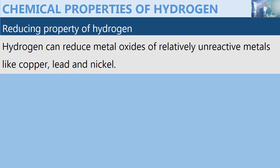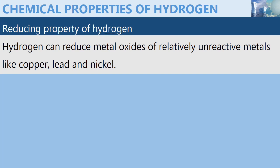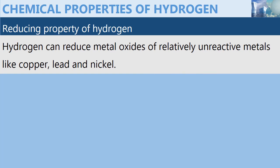Generally, hydrogen in the previous experiment has shown what we call a reducing property, because it was oxidized to water while it reduced the metal oxide to metal. So hydrogen can reduce metal oxides of relatively unreactive metals such as copper, lead, and nickel.